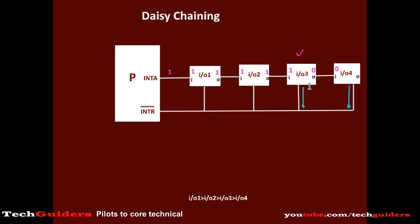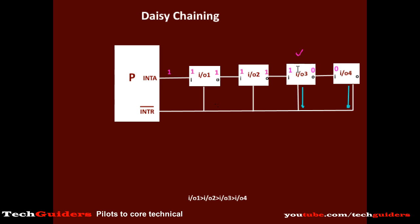The priority order is determined by the order in which the devices are arranged in the daisy chain. The device which is electrically closest to the processor has the highest priority. If any device raises an interrupt, the acknowledgement signal from the processor is first received by this highest priority device, and it will pass the signal to the next device in the chain only if it does not require any service. This continues throughout the chain, so the device whose input equals 1 and output equals 0 is the one who is serviced.